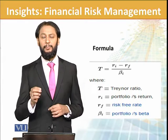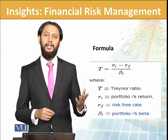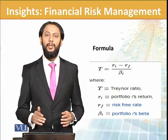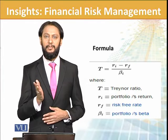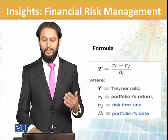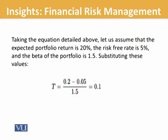The risk-free rate assumption: when you invest at the risk-free rate, you are taking no risk. So when you take excess systematic risk, how much excess return are you getting against it? For example, if the expected portfolio return is 20%, the risk-free rate is 5%, and the beta is 1.5, then: (0.2 - 0.05) / 1.5 = a Treynor ratio of 0.1.